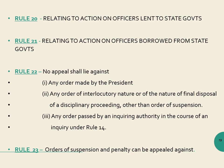Rule 22 states that if the President has made an order related to disciplinary proceedings — other than suspension — or if the disciplinary authority has passed an order under Rule 14, those orders will be final and no appeal will be possible against them. However, Rule 23 says that orders of suspension and penalty can be appealed against.